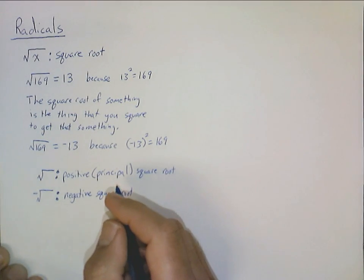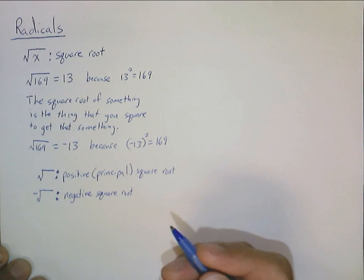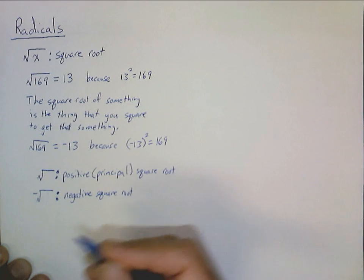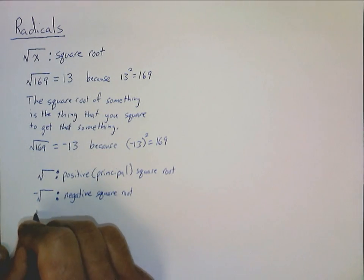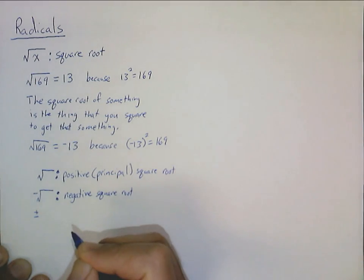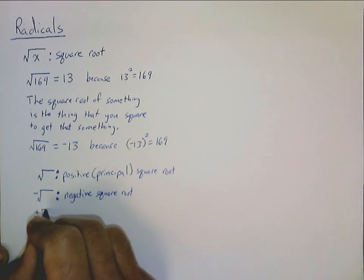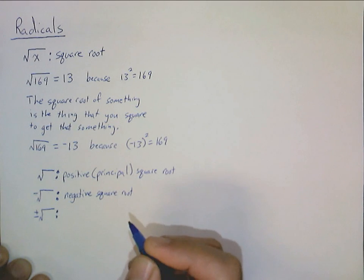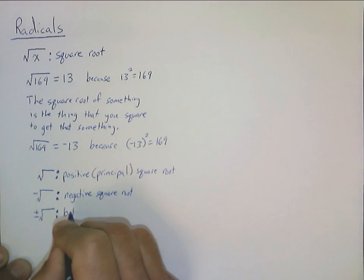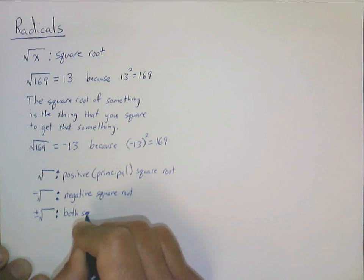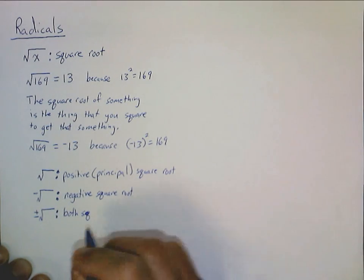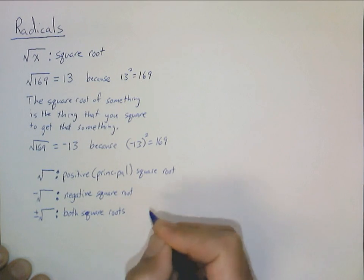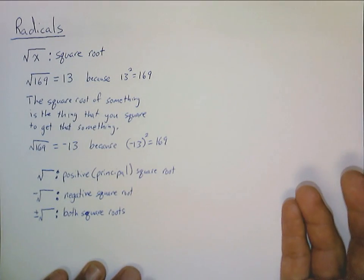In many situations we want both square roots, so we bring back notation from when we talked about absolute values — the plus-and-minus sign together. If we put that in front of the radical, that means we're talking about both square roots — two different numbers at the same time. That's just the notation.